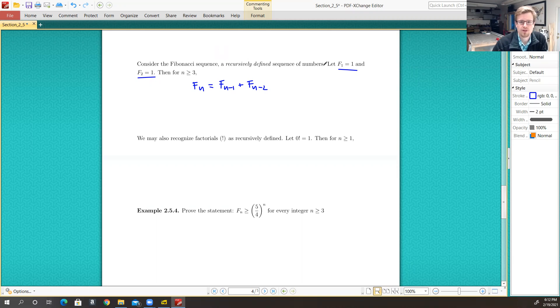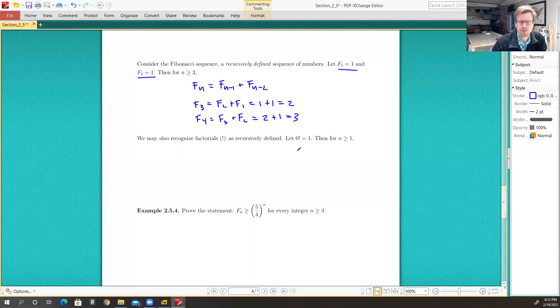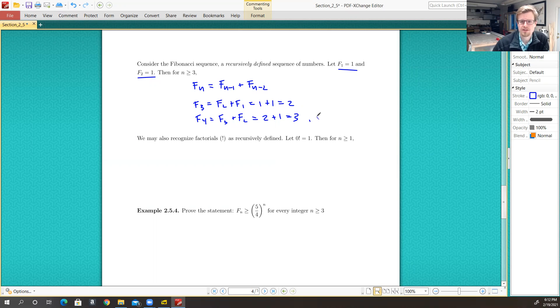So F1 is 1, F2 is 1, F3 is equal to F2 plus F1, which is 1 plus 1, or 2. F4 is F3 plus F2, which is 2 plus 1, which is 3. But I could continue this on, right? 2 plus 3 is 5, 3 plus 5 is 8, 5 plus 8 is 13, and it goes on. That's the Fibonacci sequence. It goes on forever.